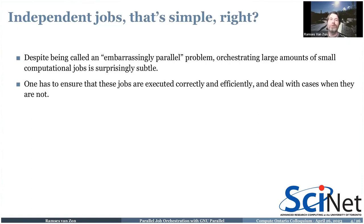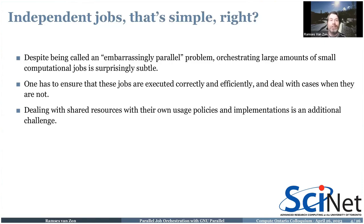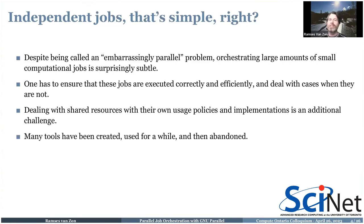You have to make sure all these jobs are executed correctly and efficiently, you have to keep track of them, and if something goes wrong — do you know which one went wrong? Can you redo them? Is there a failure of the system or a failure of parameters? When you have thousands of jobs this is rather cumbersome. In addition, on a shared resource like Graham or Niagara, you may have to deal with policies like a maximum number of jobs you can submit to the queue.